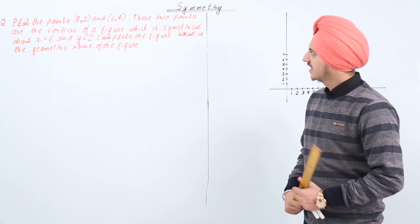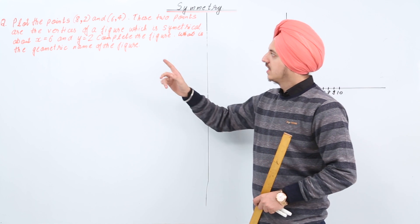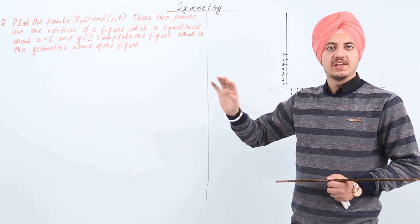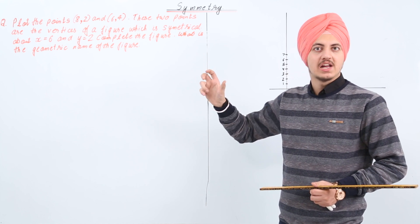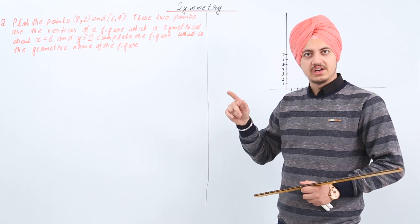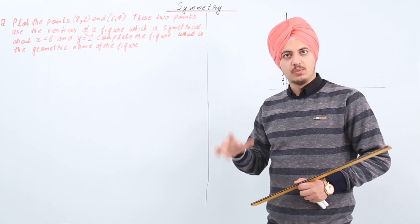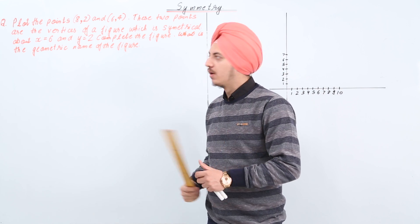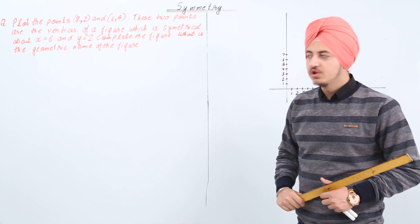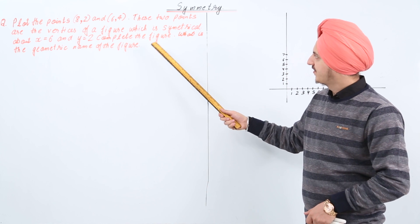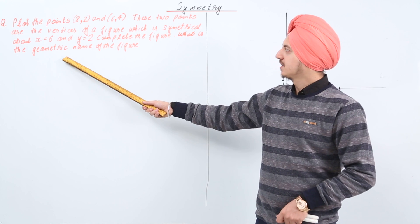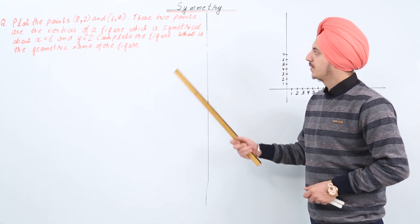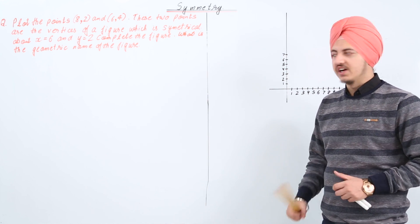These two points are the vertices of a figure which is symmetrical about x = 6 and y = 2. This means these two points are the vertices of a complete figure which will be formed by some other vertices, and that figure is symmetrical about x = 6 and y = 2. We need to complete the figure and give its geometrical name.